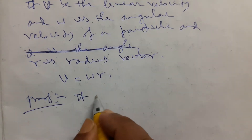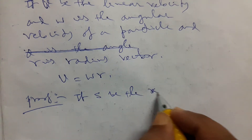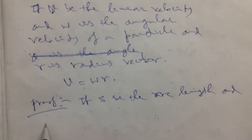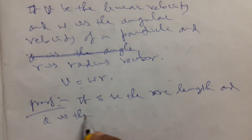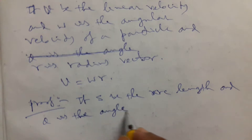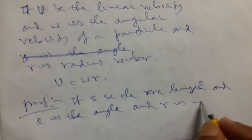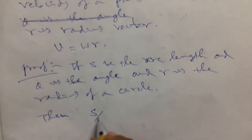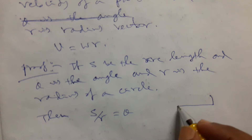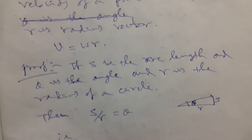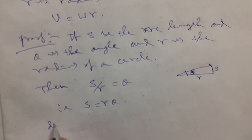Proof: if S be the arc length, and theta is the angle, and r is the radius of a circle, then we have the relation S by r equals theta. From the diagram, we can write S by r equals theta, that is S equals r theta. Now differentiating it